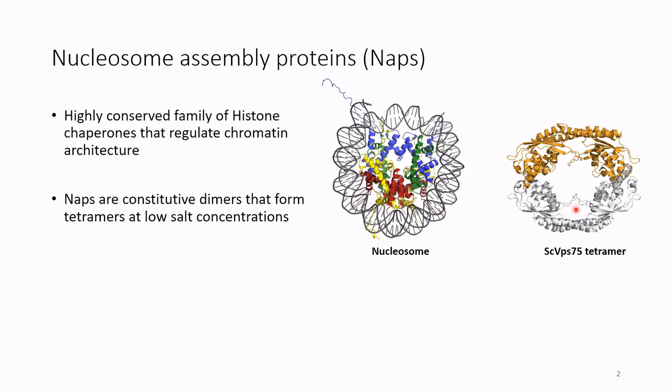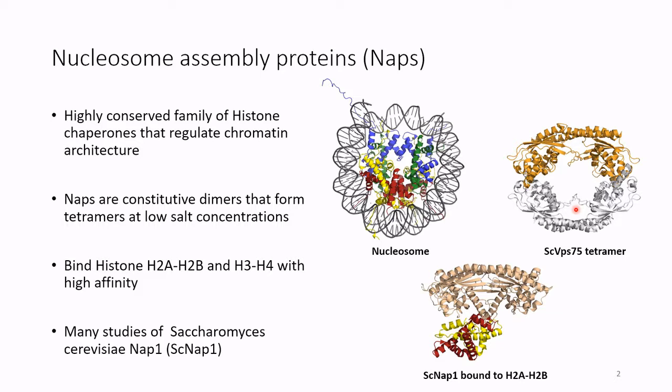We're interested in studying how NAP proteins interact with histones. NAP proteins typically bind two different types of histones with very high affinity: histone H2A/H2B and histone H3/H4. Shown here is the crystal structure of another NAP protein from yeast, yeast NAP1, bound to a single copy of histone H2A/H2B. Many people have studied yeast NAP1 and it's almost a model system for understanding how histone chaperones work. Despite the presence of this crystal structure, debate still remains as to the absolute stoichiometry between a NAP protein and a histone.